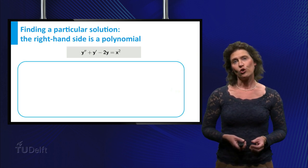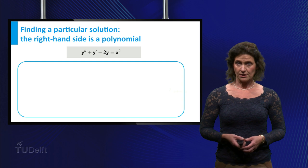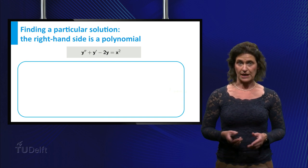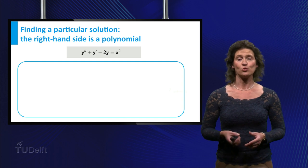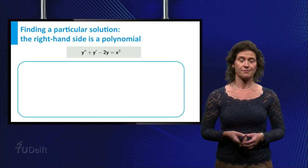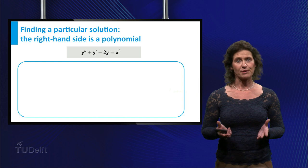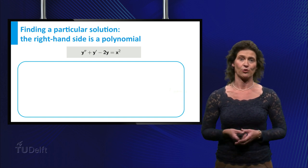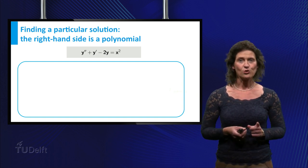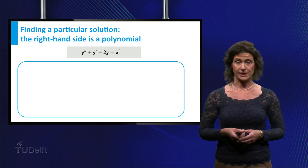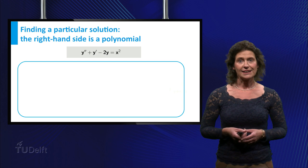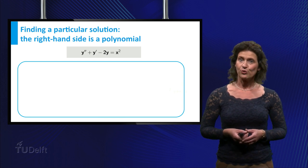To solve a non-homogeneous differential equation, you have to go through several steps. One of them is to find a particular solution of the equation. Let's focus on this step in the first example you just saw. Take a closer look at the form of the function of the right-hand side of the equation. The right-hand side is a polynomial of degree 2.